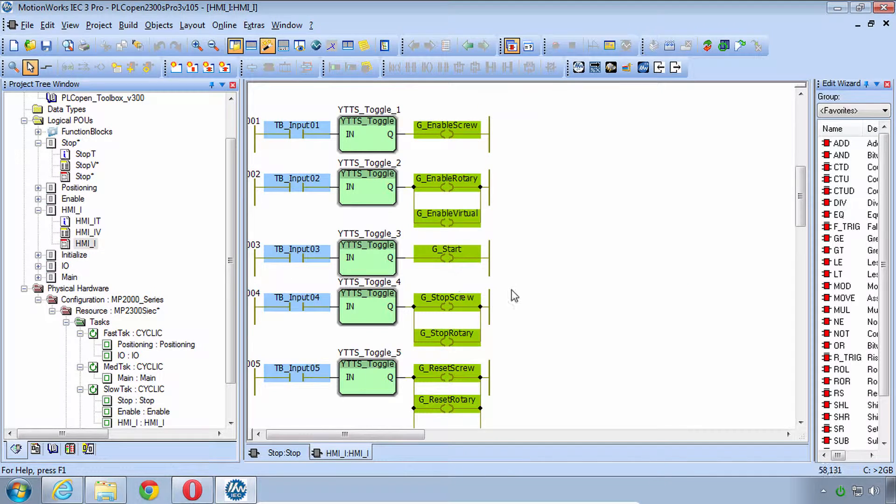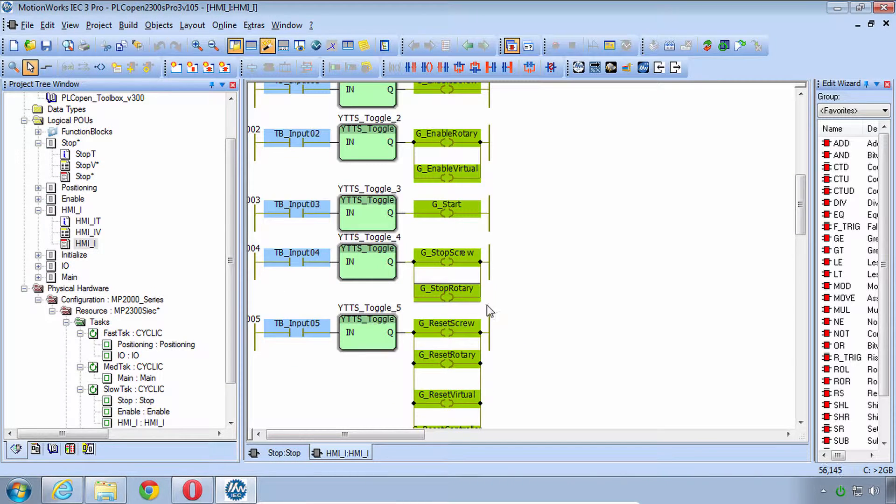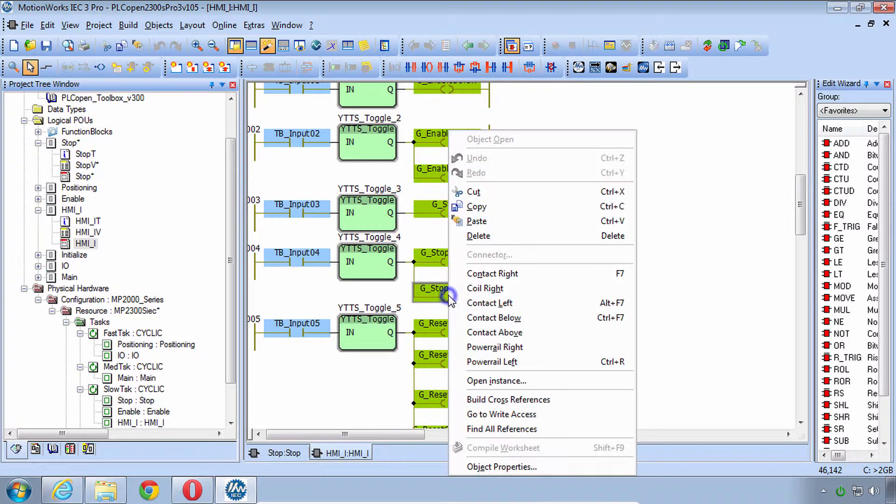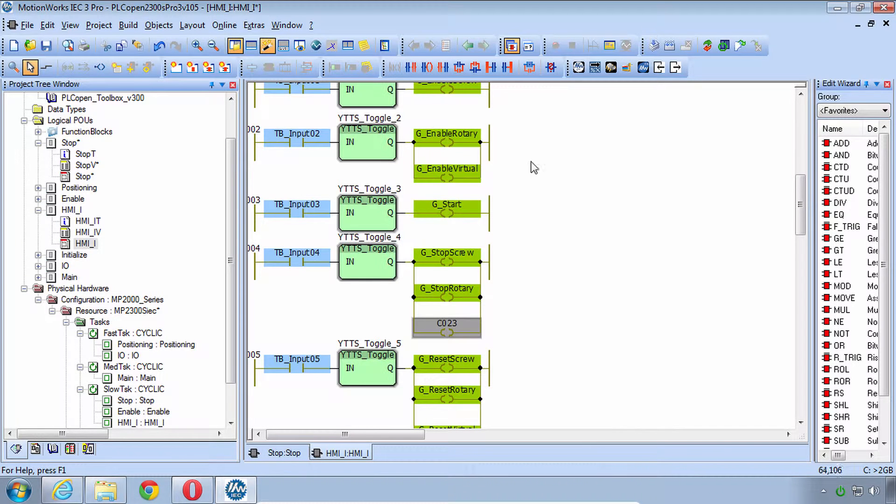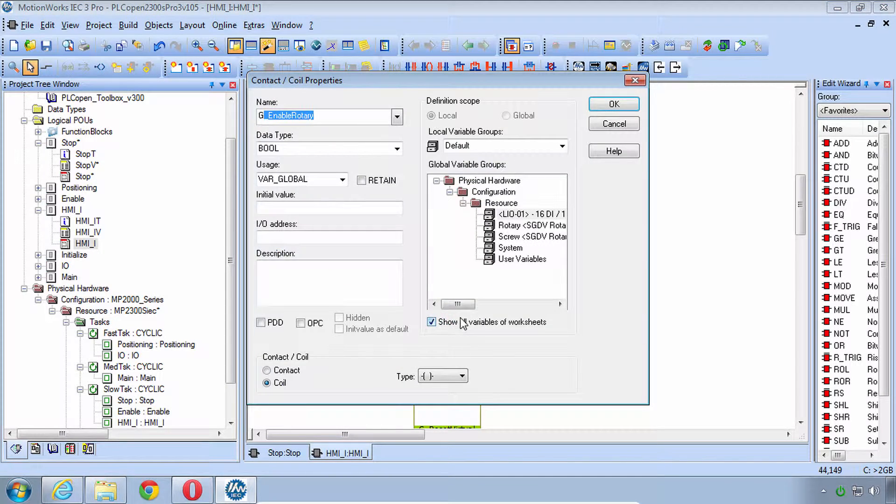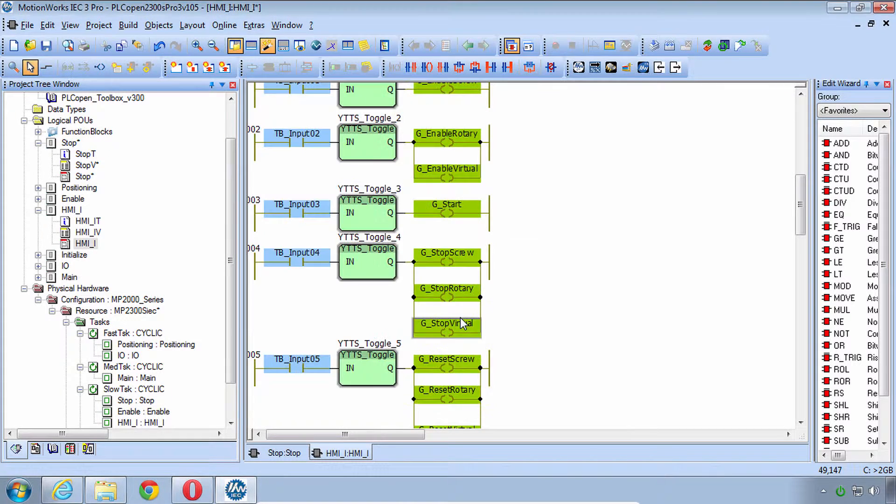Looks like I had a G_Stop_Virtual but don't have it in the code. It's not too hard, you can right-click. Add a Parallel Contact here, and we'll put in G_Stop_Virtual. Stop them all with one input. Alright, let's download those changes.